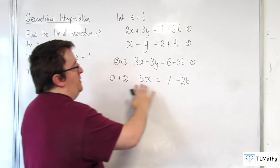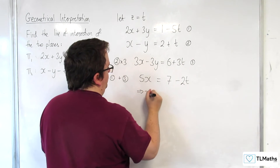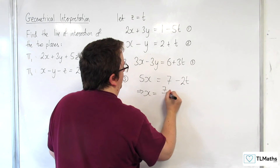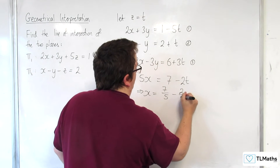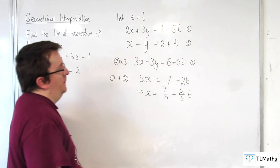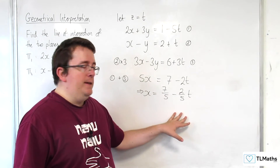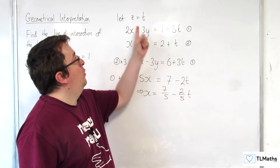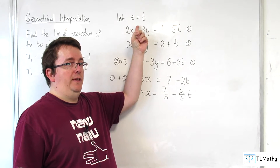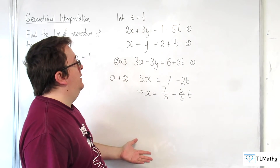Now I can divide through by 5. So x equals 7 fifths minus 2 fifths t. So I've got x in terms of t, and I've already got z in terms of t, so I now need to get y in terms of t.